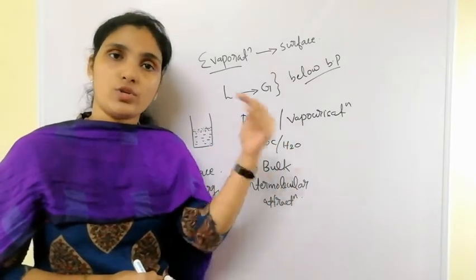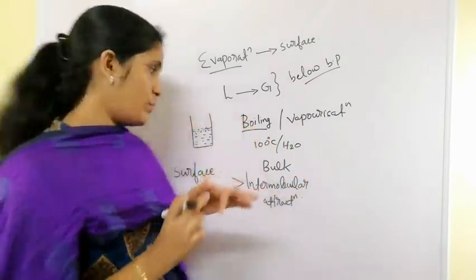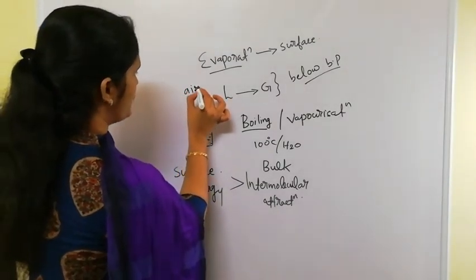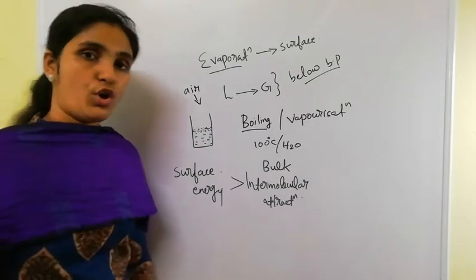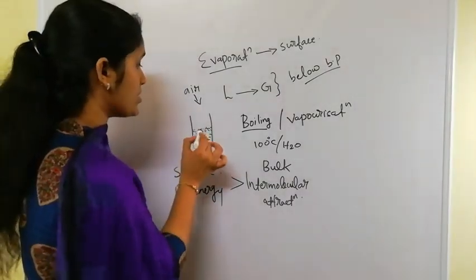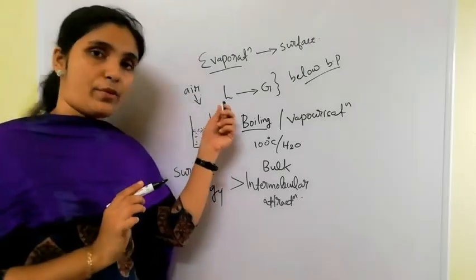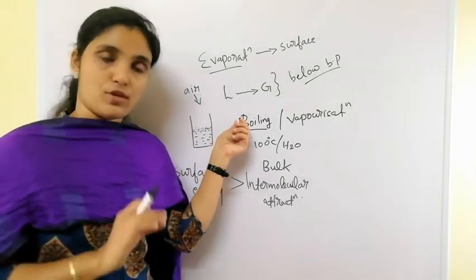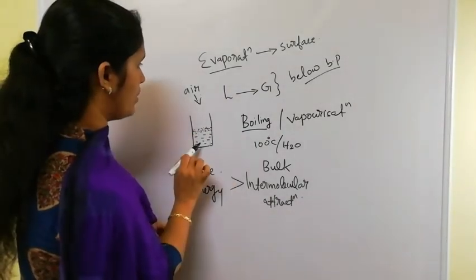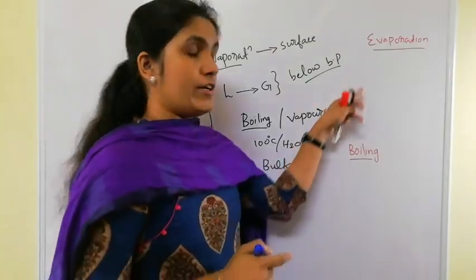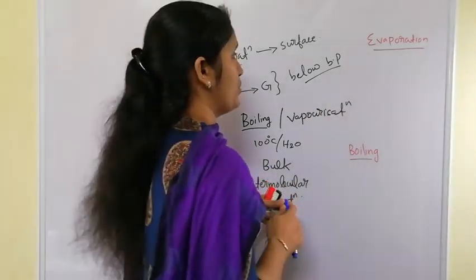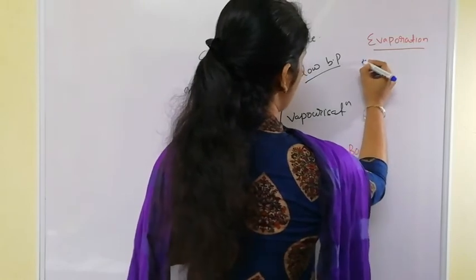If this is an open beaker exposed to air, two types of collision occur: liquid-liquid collision, and collision of liquid particles with air particles. Now let us list the differences between evaporation and boiling. First: evaporation occurs below the boiling point, but boiling occurs at the boiling point.